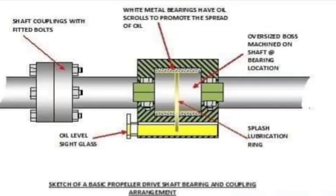As the propeller rotates, it creates propeller thrust, which is taken up by the propeller shaft and passed onto the intermediate shaft. This happens because the propeller shaft and intermediate shaft are connected together. The thrust is then absorbed by the thrust block. The main reason the thrust block is placed at the aft-most part of the engine is that the crankshaft must be protected from propeller thrust — the crankshaft should never be subjected to propeller thrust.